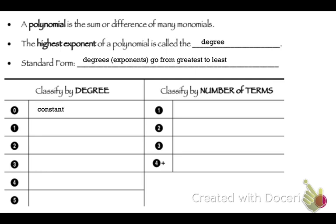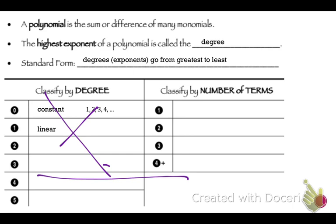Now classifying them: if there is a degree of 0, so like a constant, that's just a constant — any number. The first degree is linear, meaning it's a line. The graph of a linear function looks like a line, and examples would be x, 4n, or 3y plus 2. Degree 2 is quadratic — it forms a parabola shape. Examples: x squared, 12r squared, or 3z squared plus z plus 1. The highest exponent just has to be 2.